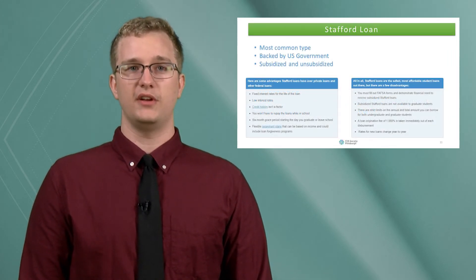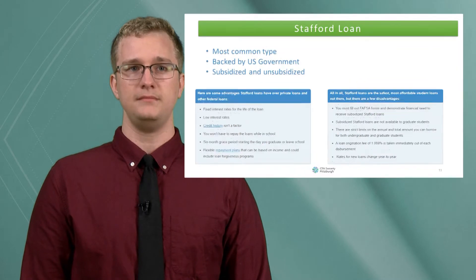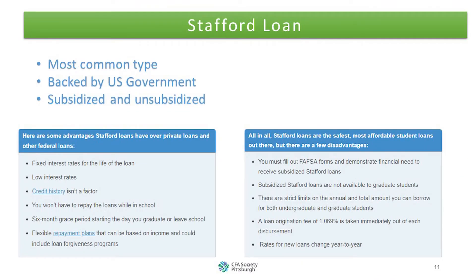Next let's talk about Stafford loans. These are the most common type of loans for students to take out. They're backed by the government, both subsidized and unsubsidized. Just a fun fact: they're typically called direct loans. At the bottom of the screen you will see advantages and disadvantages of taking out a Stafford loan.